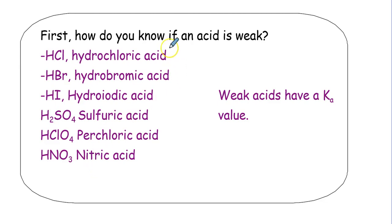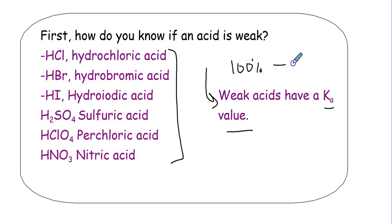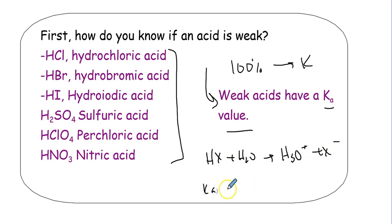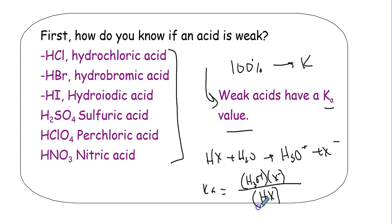Which ones are weak and which ones are strong? Remember these are the six strong acids. A thing to know is that weak acids have a Ka value, while strong acids go 100% to product and don't need a Ka value. Ka is for things that don't go to completion. For a strong acid HX + H2O yields H3O+ + X-, if it goes to completion the denominator HX goes to zero, so Ka is infinitely large - it doesn't do any good.